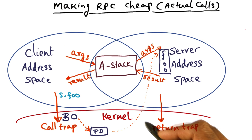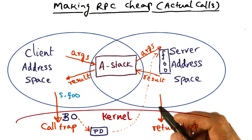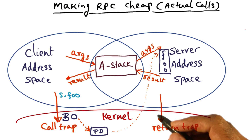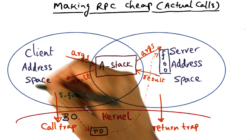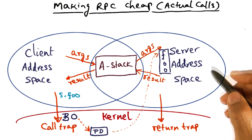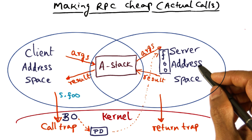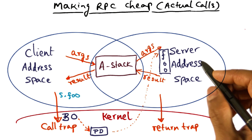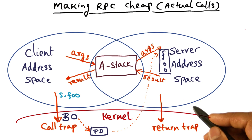So those are the explicit costs. But having done a lot of work on operating system structures, we know that there are implicit overheads associated with switching protection domains. The implicit overhead is the loss of locality due to the domain switching that's happening.